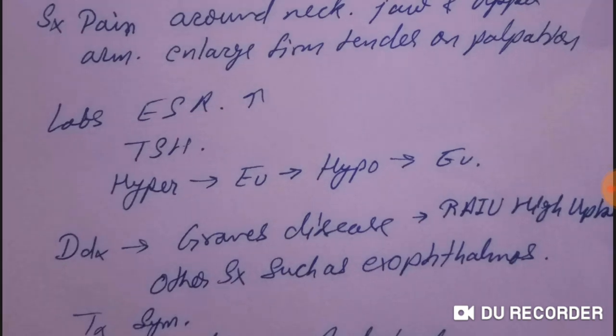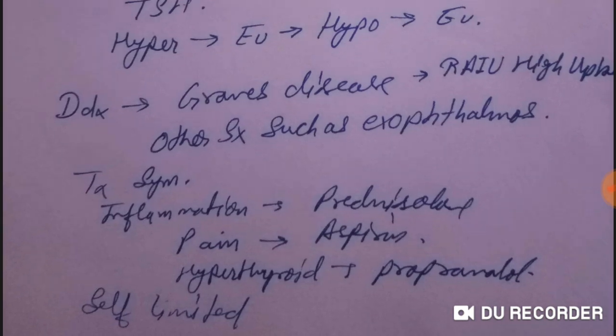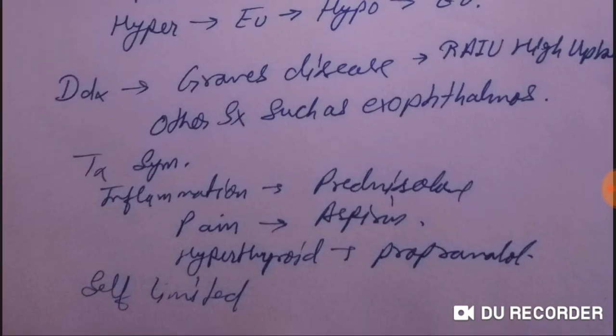In labs, the ESR level is increased. The best initial step is to check TSH. We can see hyperthyroid, hypothyroid, and euthyroid conditions. The TSH is sometimes very low, showing symptoms of hyperthyroidism.